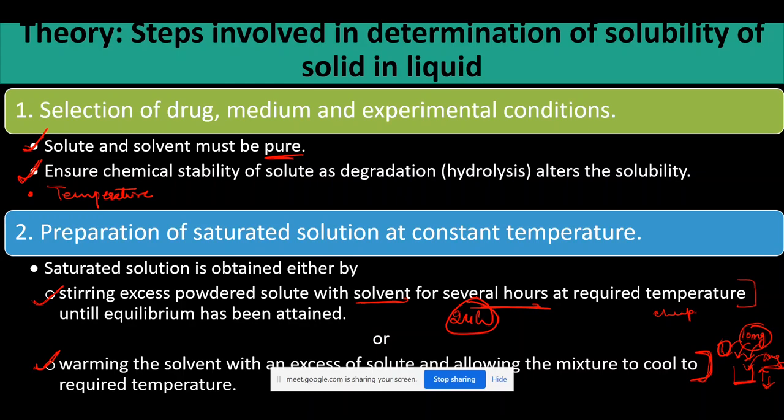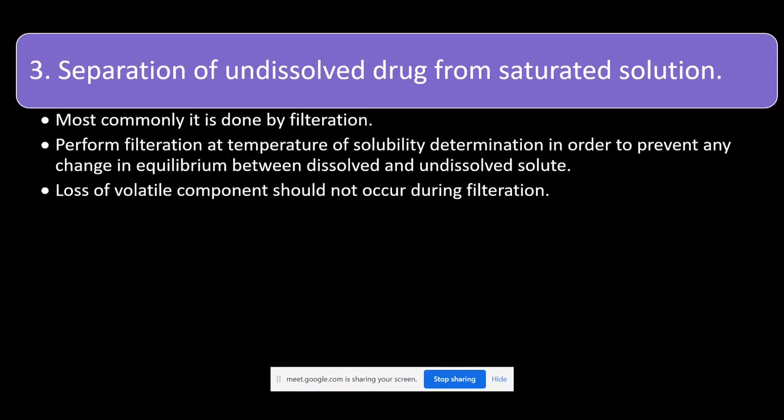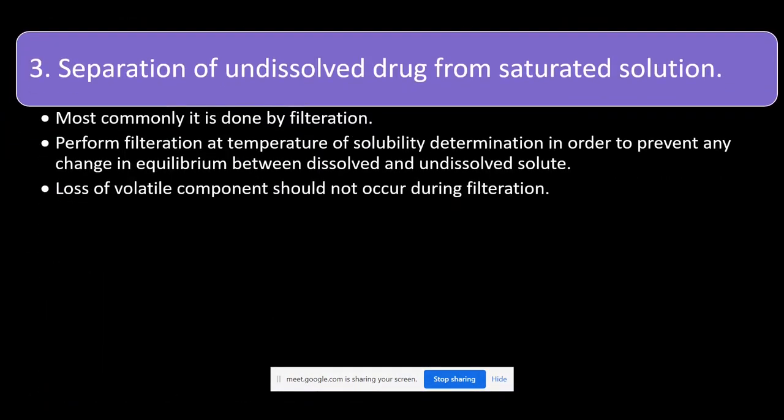The second method is comparatively faster than the first method. So if you plan to find out the solubility of a solute today using the first method, you will get results tomorrow because saturated solution takes time to reach equilibrium. This method is comparatively faster because I am adding the temperature factor. The third step will be: I have selected all my components, ensured the purity and stability, and made a saturated solution by either of the two ways.